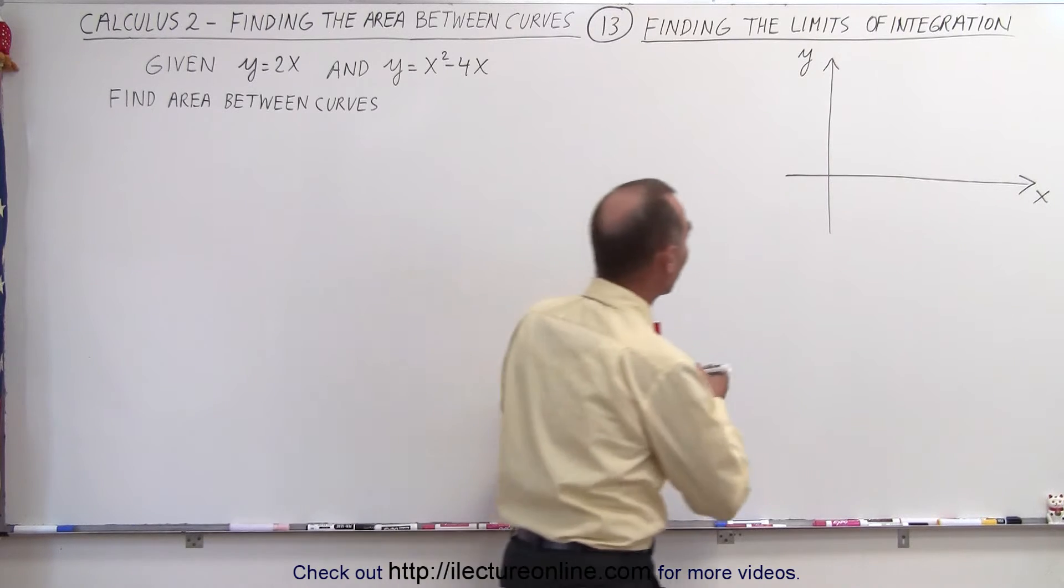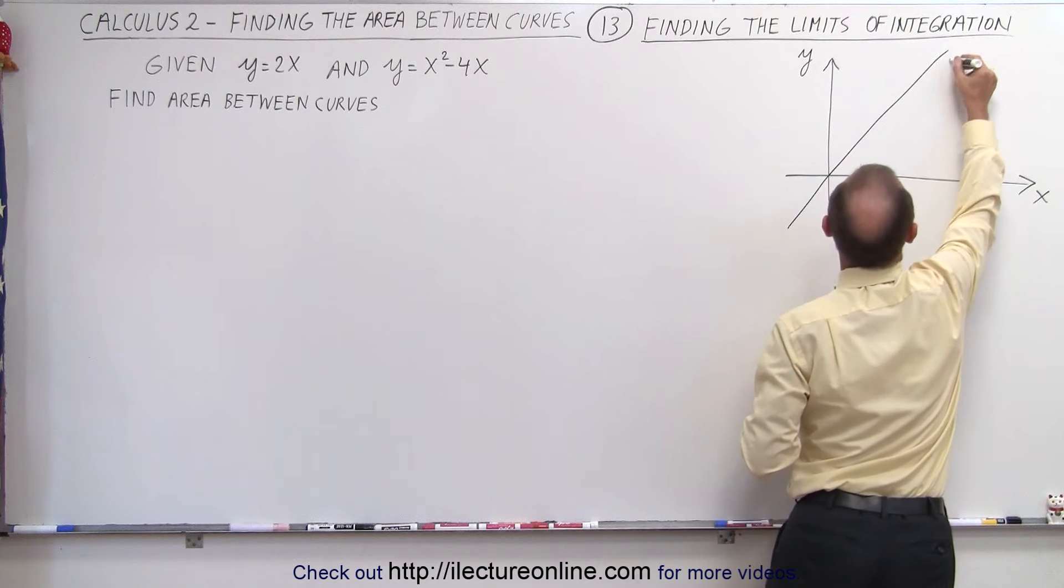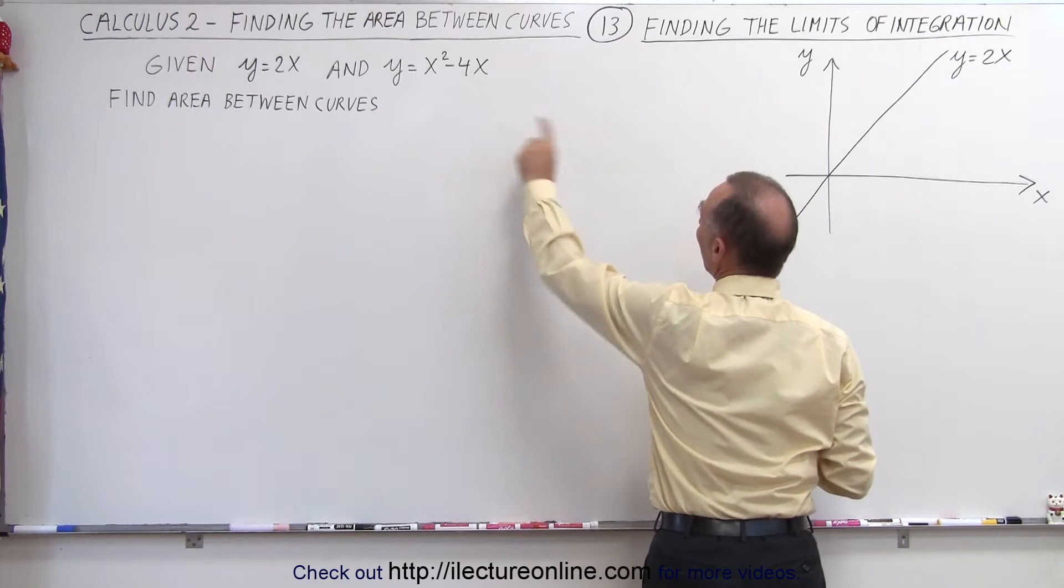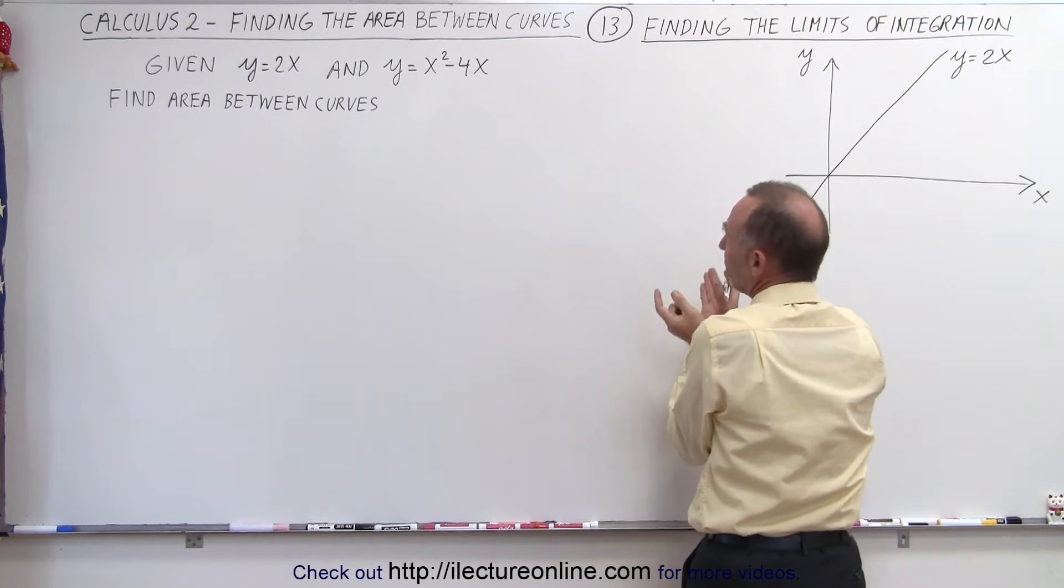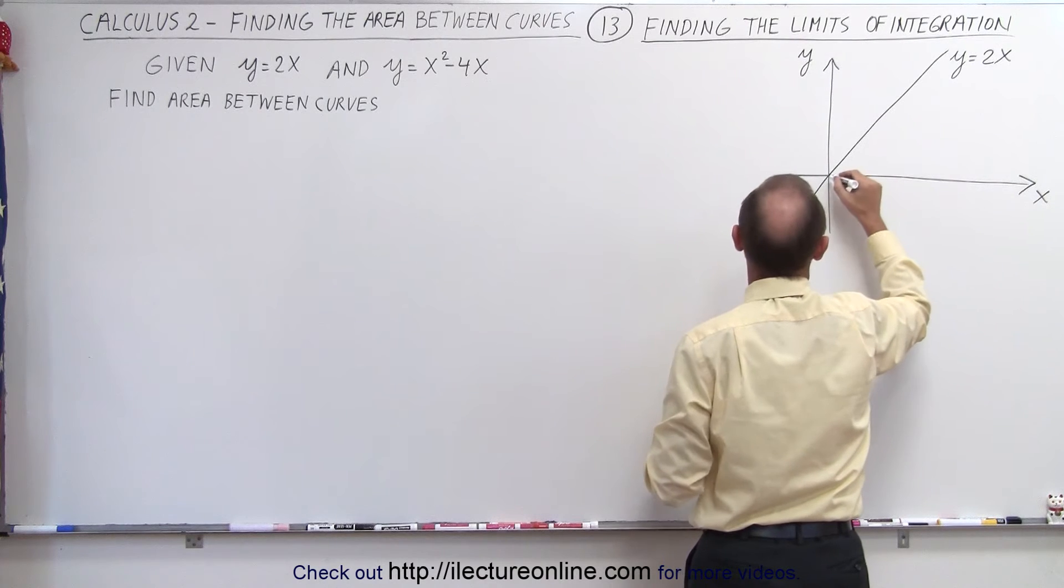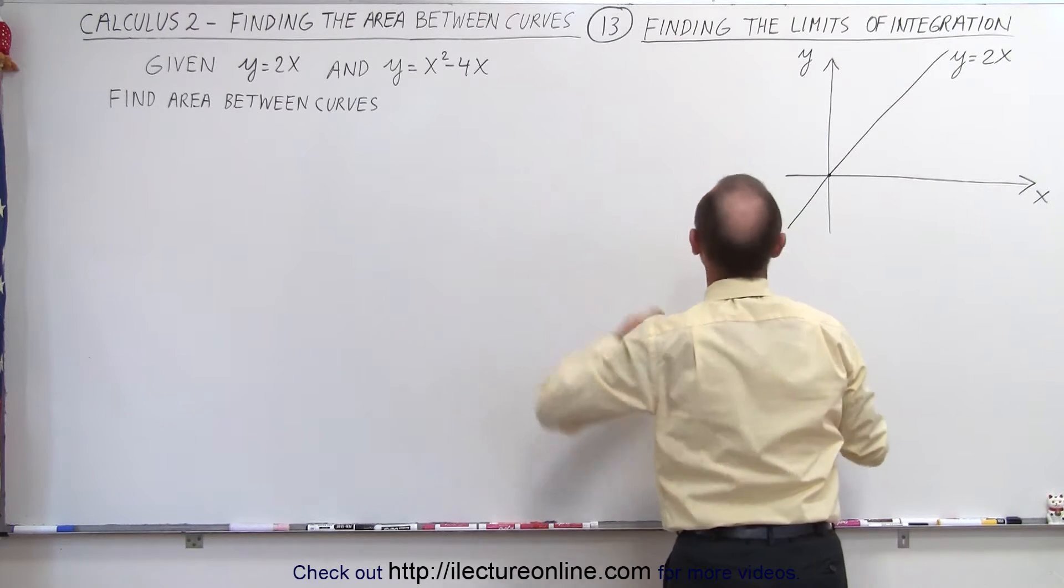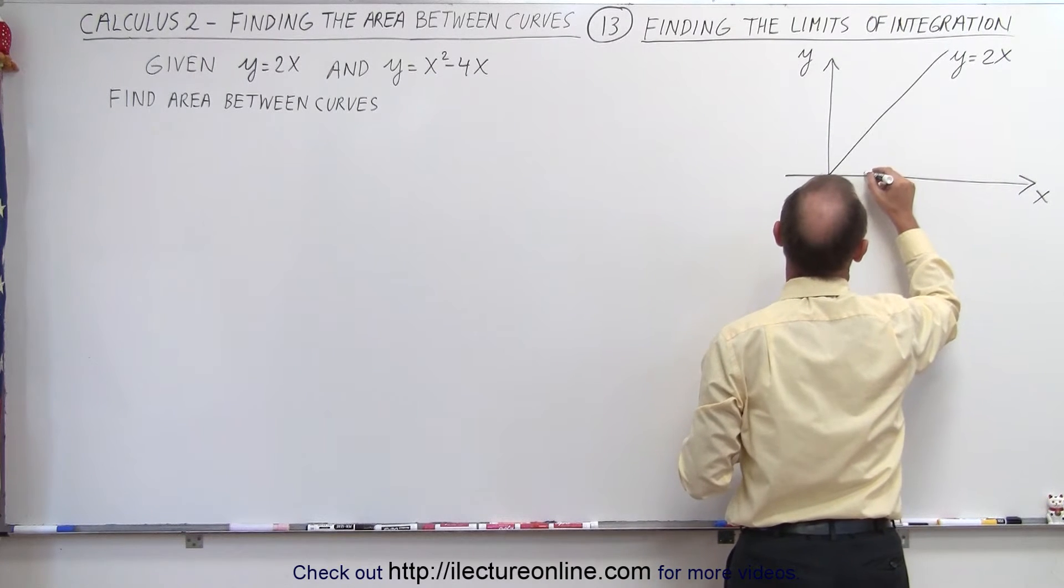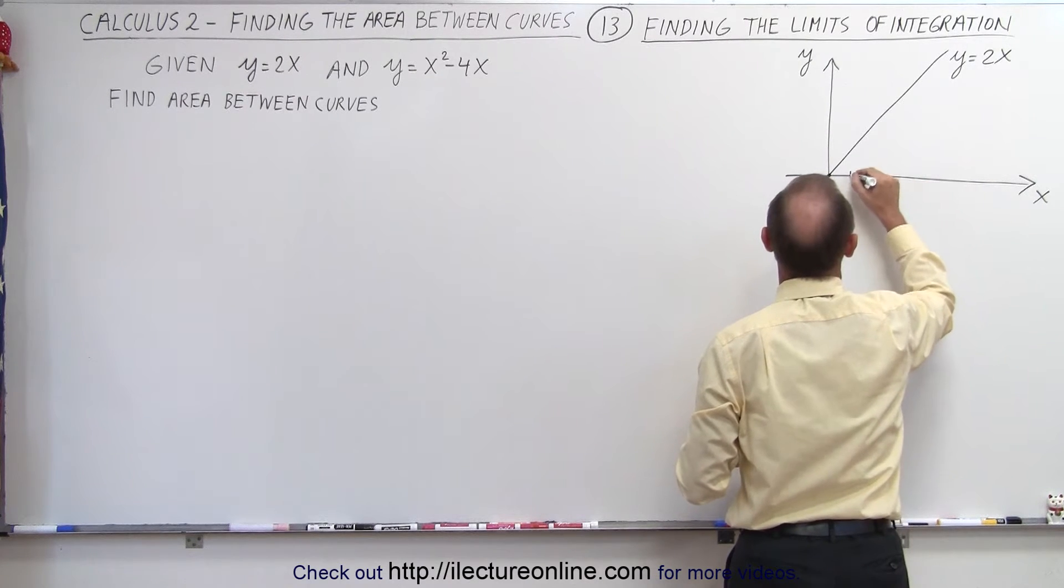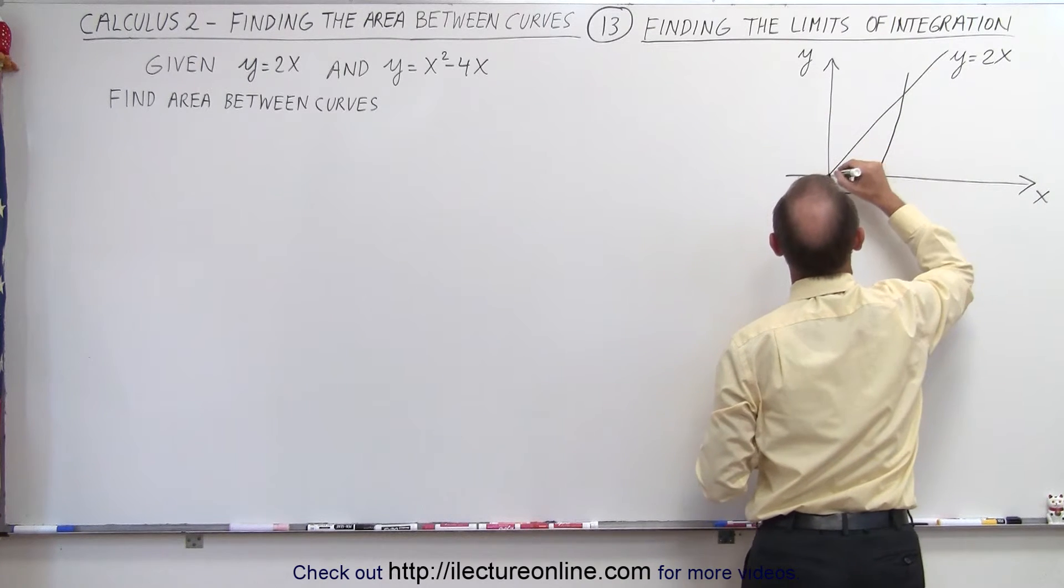Now y equals 2x, that's an easy one to graph, that kind of looks like this. So we have y equals 2x, and then we have y equals x squared minus 4x. That looks like a quadratic equation that opens upward, and x equals zero at the origin would be one place where it crosses the x-axis. You can see that the parabola opens upward like that.